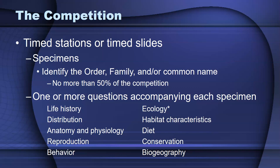Identification can be at the order, family, or common name level. This cannot be more than 50% of the competition. With each specimen, there will be one or more questions that focus in on any one of these very broad topics about birds.